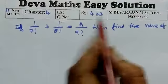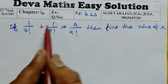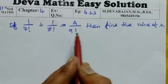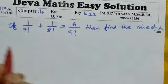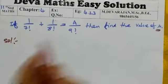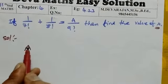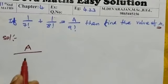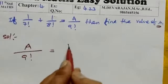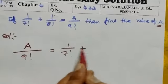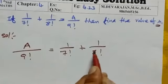Launcher max set of 4, exam 4.23. If 1 by 7 factorial plus 1 by 8 factorial equals a by 9 factorial, then find the value of a. Let's show you: a by 9 factorial equals 1 by 7 factorial plus 1 by 8 factorial.